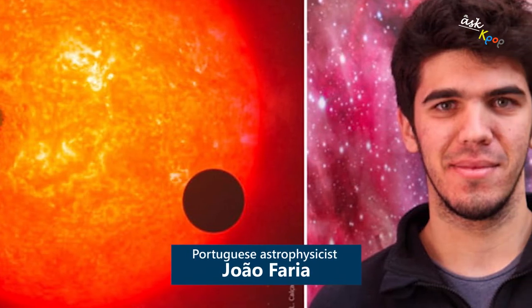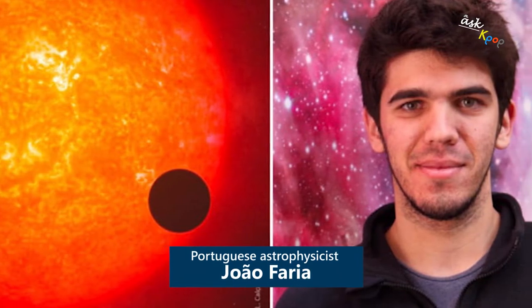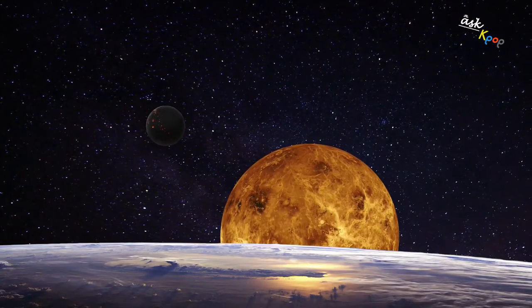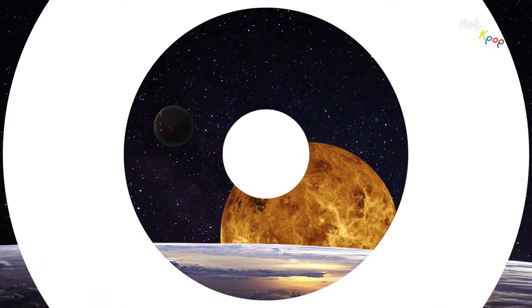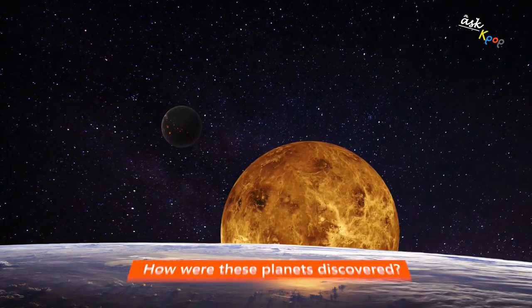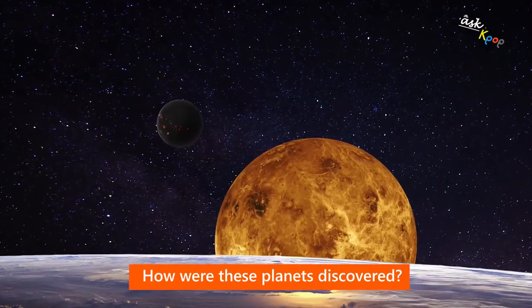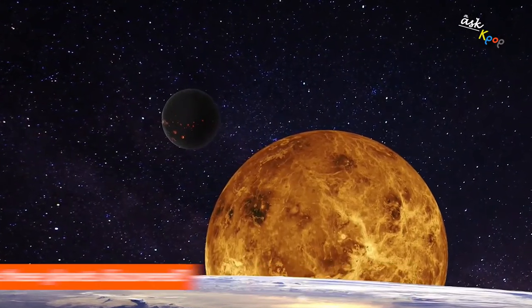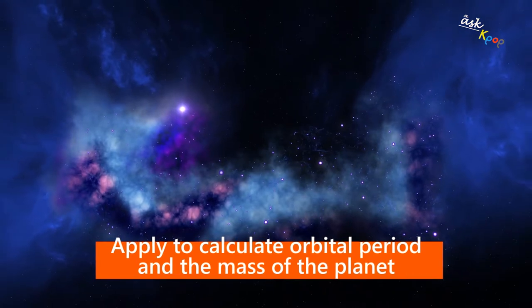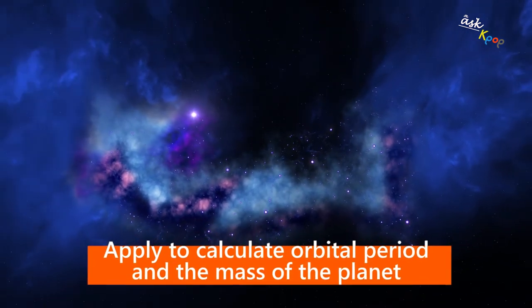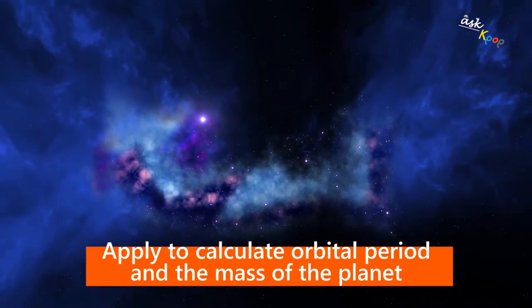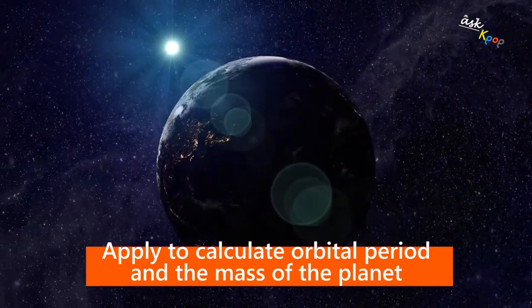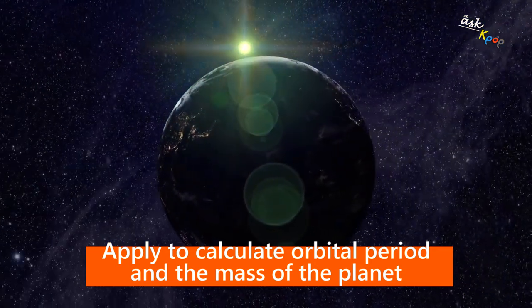The radial velocity technique is a method of planetary detection that indirectly measures the gravity of planets on their host star. We observe the star itself, not the planet, and see it move back and forth while the planet completes an orbit. From this periodic variation in a star's velocity, we can measure the orbital period, or how long it takes the planet to complete one orbit, as well as the mass of the planet.